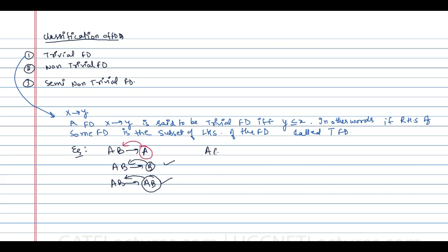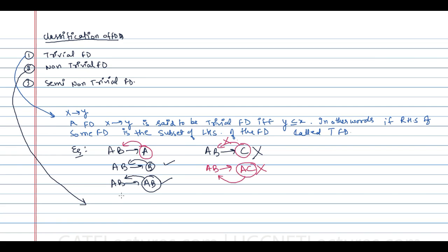If we say AB determines C, it is not a trivial functional dependency because the right-hand side C is not a subset of the left-hand side AB. Therefore it is not a trivial functional dependency.